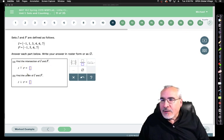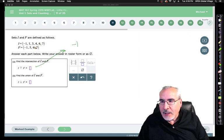So we want to find the intersection. What is I intersect F? That is, what elements do they have in common? So they both have a negative 1. Just maybe list that over here. They don't have a 1, 3, 4, 6. Oh there, they both have a 6. That's common. And they both have a 7. So that's the intersection.